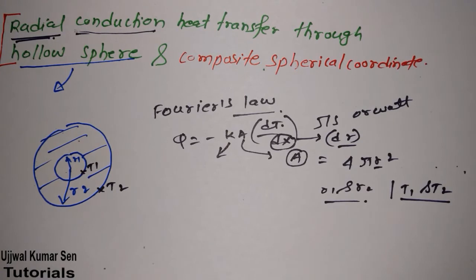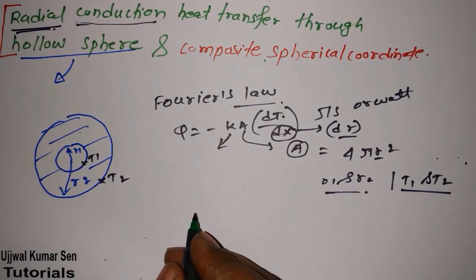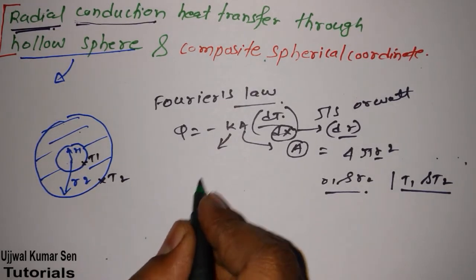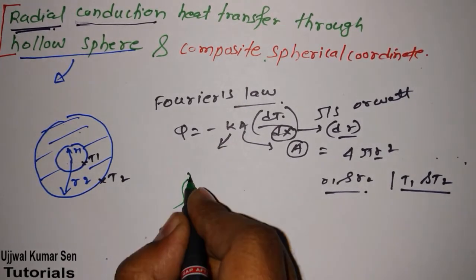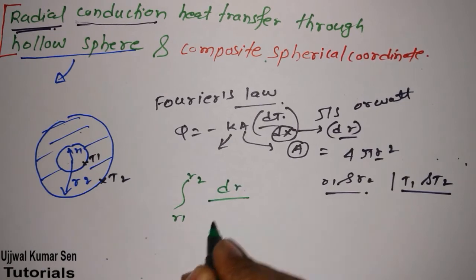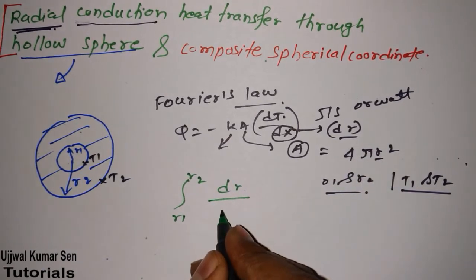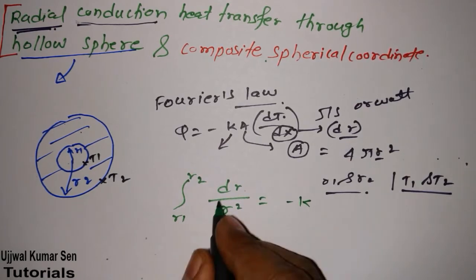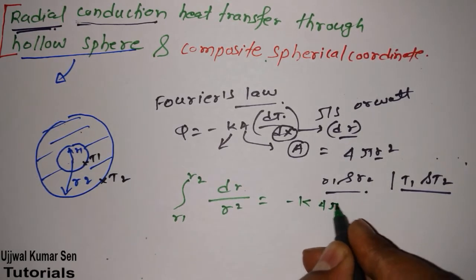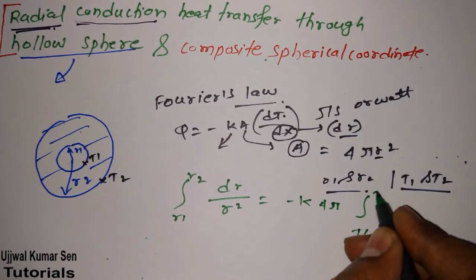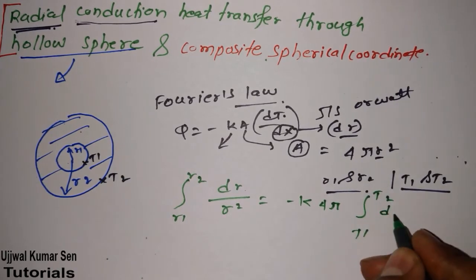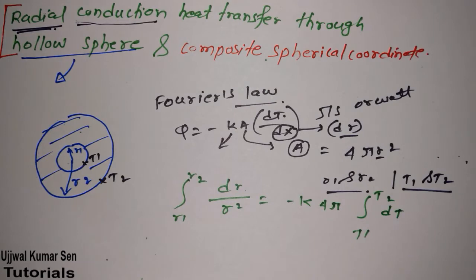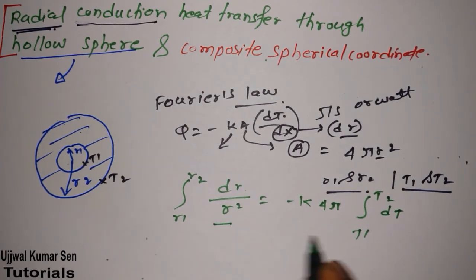So what we are going to do is integrate this equation. We integrate q from r1 to r2 with dr divided by 4πr², and on the other side we integrate k times dT from T1 to T2.